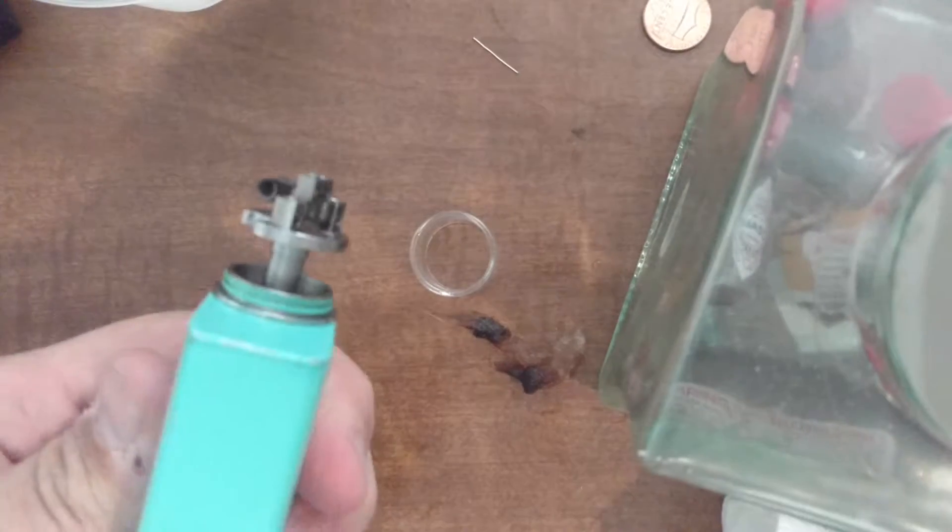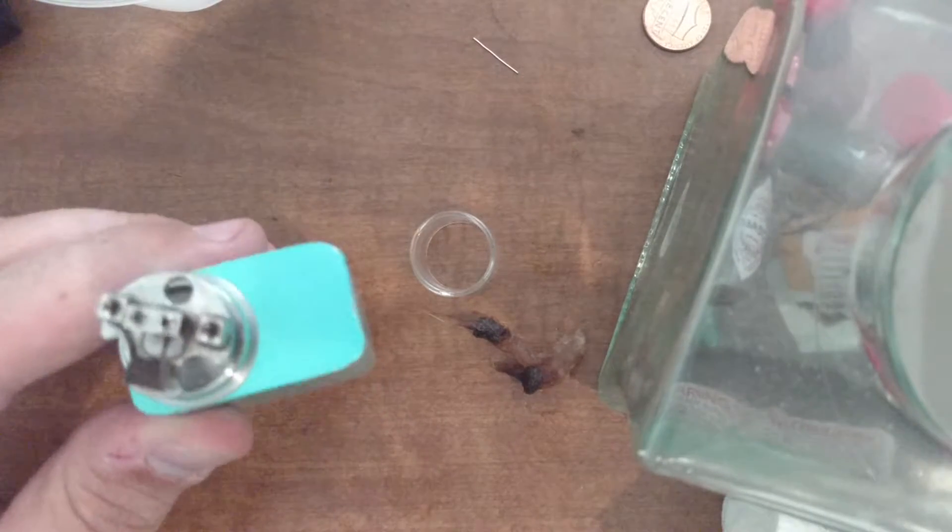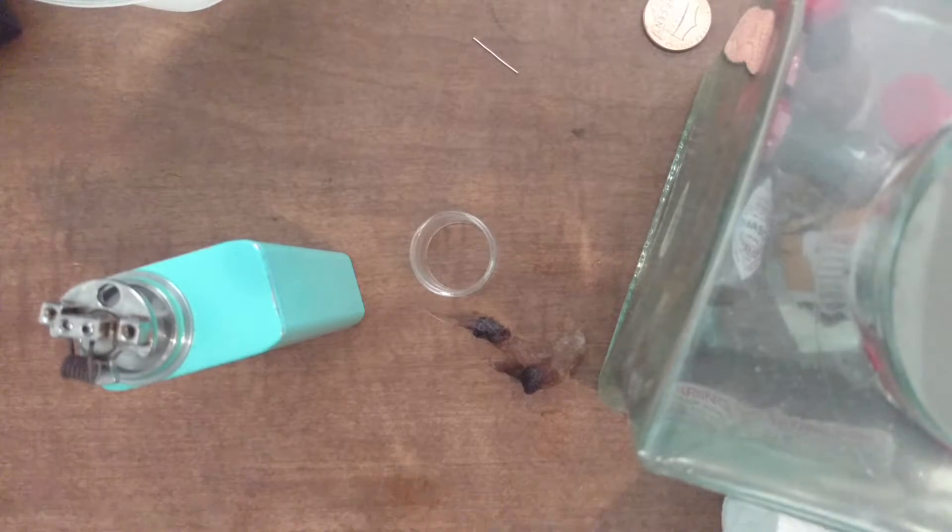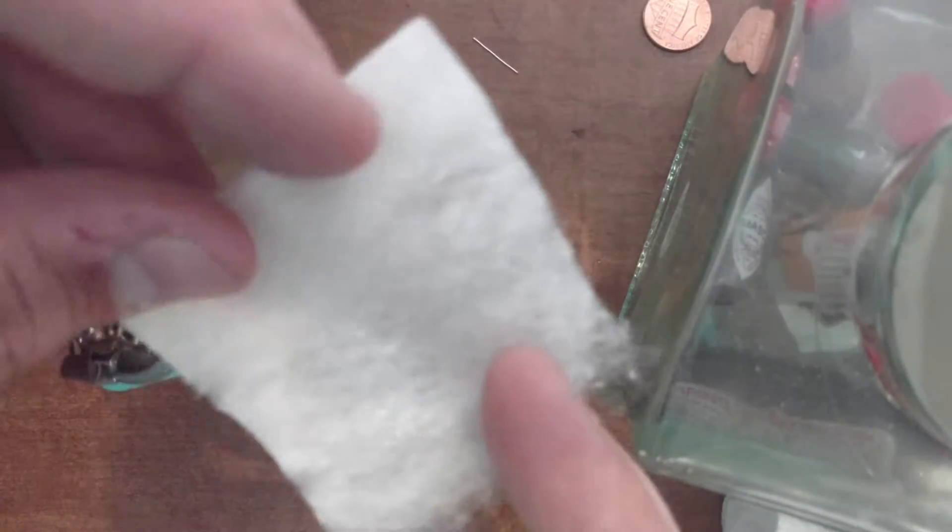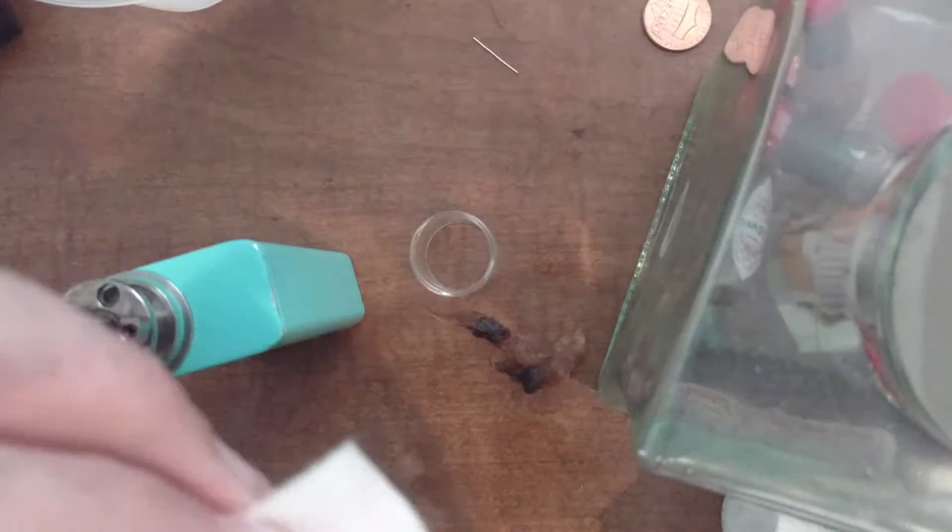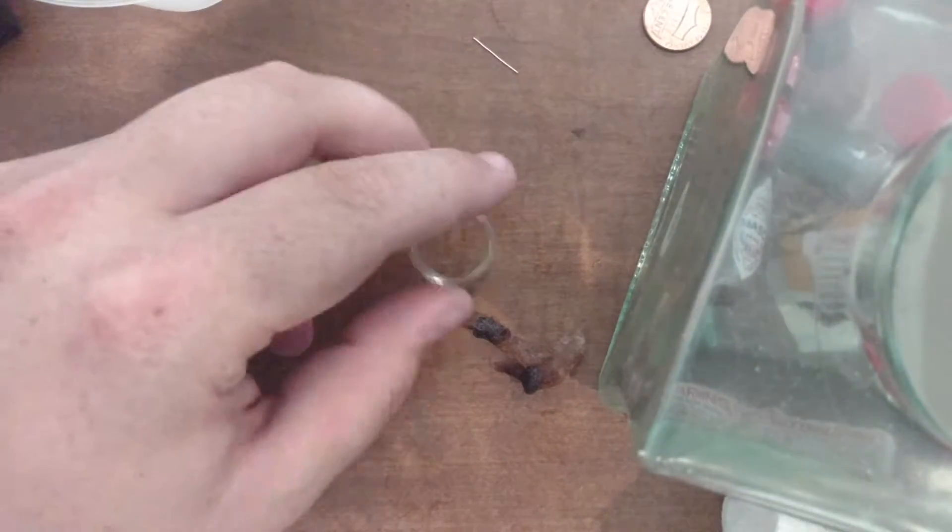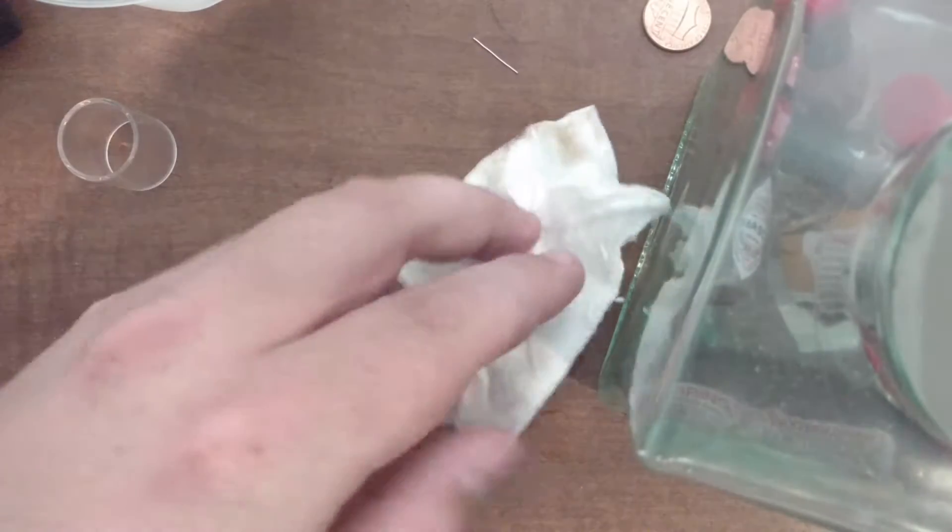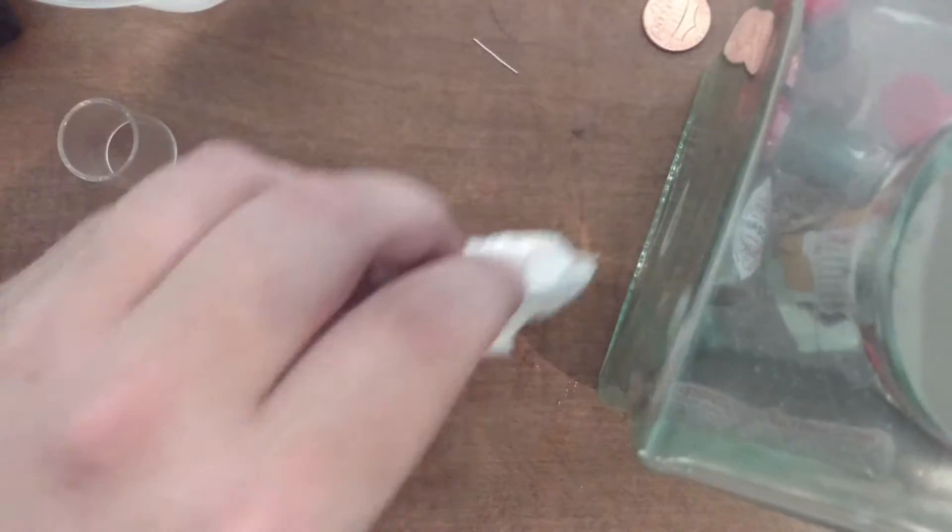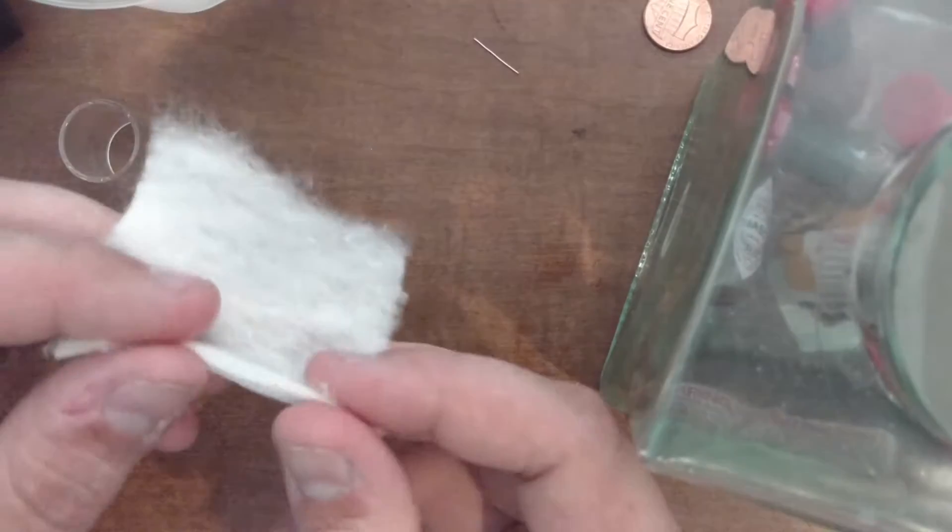So as you can see, the inner diameter of that coil is smaller than the size of that hole in the deck. So I've got a little bit of cotton right here that I pre-pulled pretty much. I'm going to go ahead and stretch that a little bit more. Move some of this stuff too, so you can see me do it. That's the whole point of the video, right? Watching me do it.